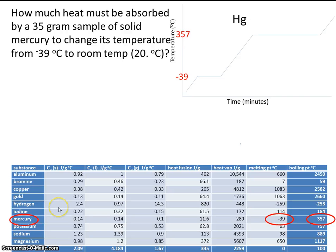Now let's read the question one more time carefully. How much heat must be absorbed? Absorbed means the energy is going in. That will be endothermic. So that means ultimately our answer is going to be positive. So how much heat must be absorbed by a 35 gram sample of solid mercury to change its temperature from -39 to 20?